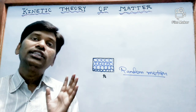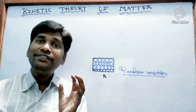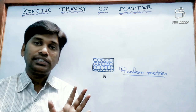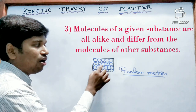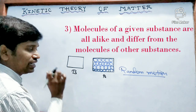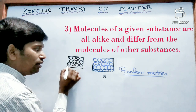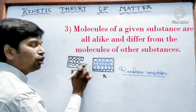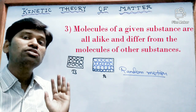So the second assumption is: the molecules are always in random motion. The third assumption is that molecules of a given substance are all alike and differ from the molecules of other substances. As we have seen, matter A consists of some molecules and these molecules are all alike, all of the same kind. But if we talk about another substance, another matter B, it is also made up of small particles called molecules, and molecules of matter B are also alike. But these molecules are different from the molecules of matter A.